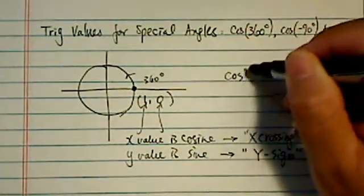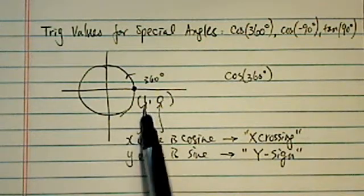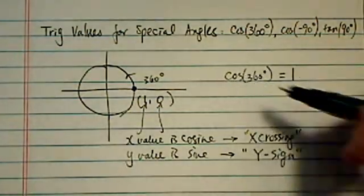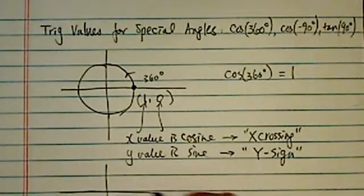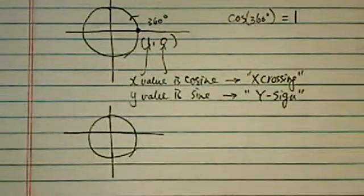Okay. So from those little two tricks, then you know that cosine 360 is going to be the, which one again, x value. So, 1. All right, and then let's try the next one. At the end of the clip, I'll explain why that thing works, but for now, let's just use it.